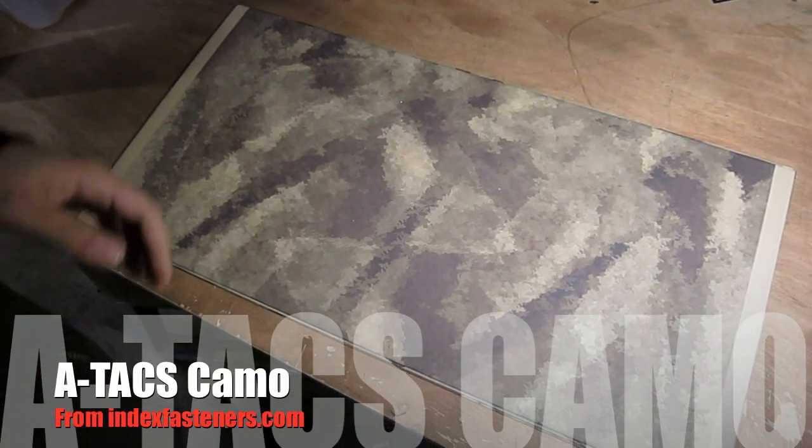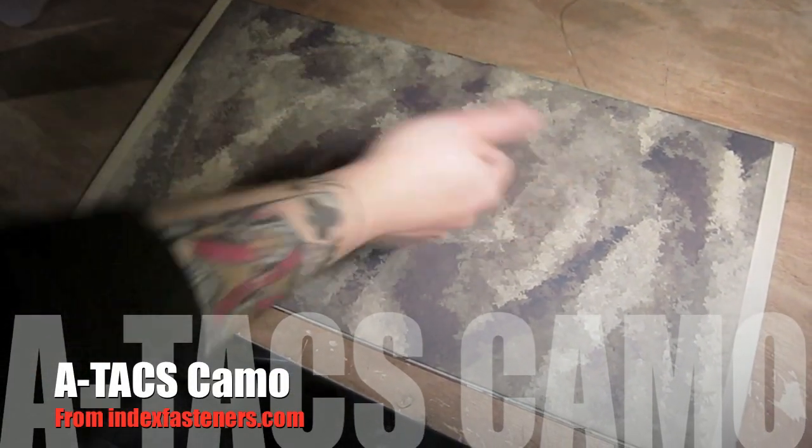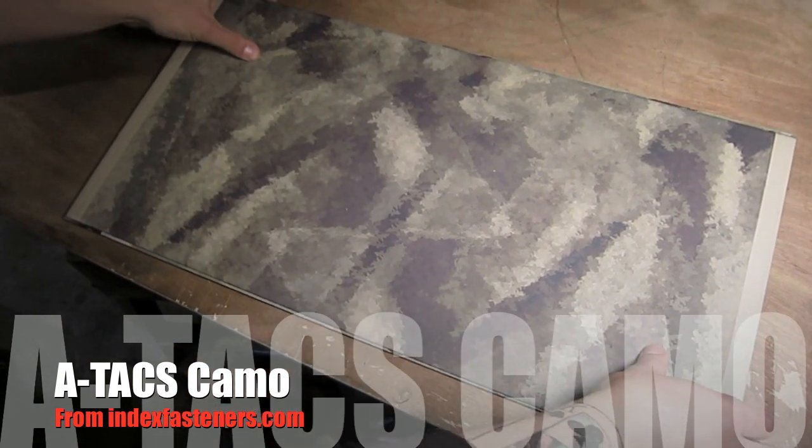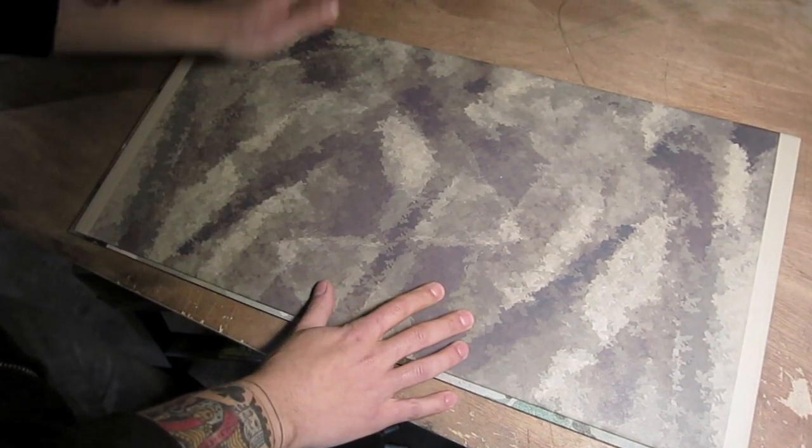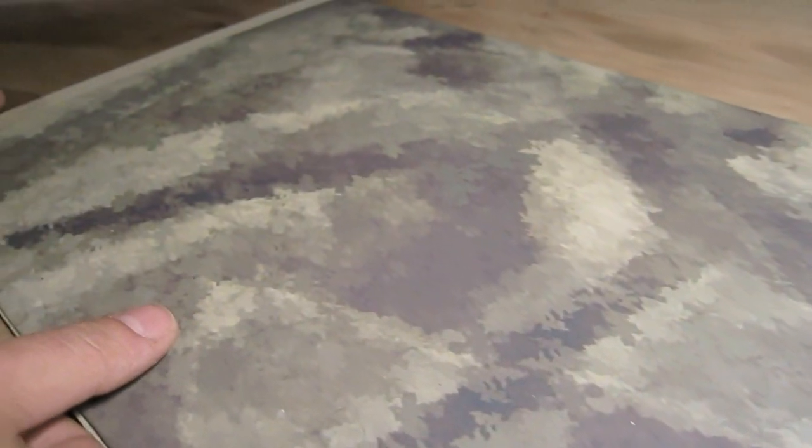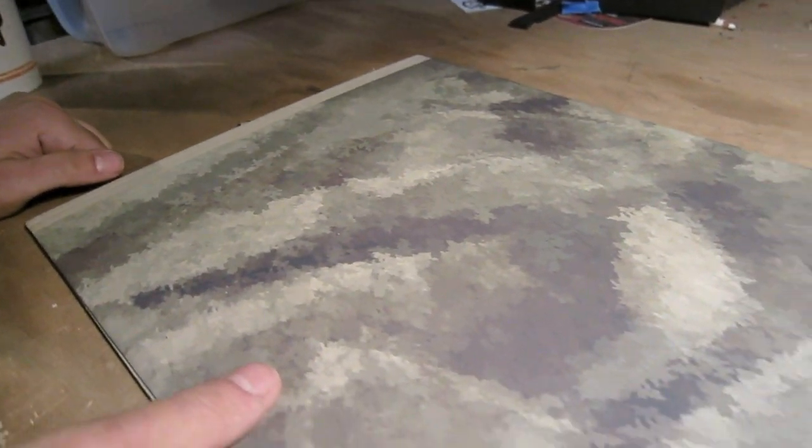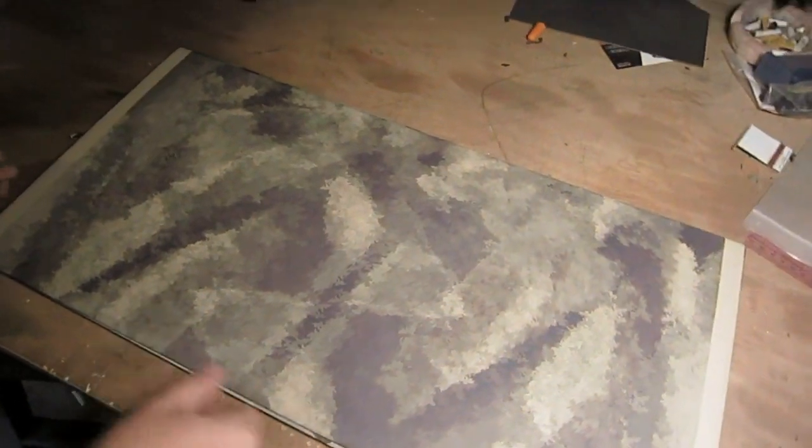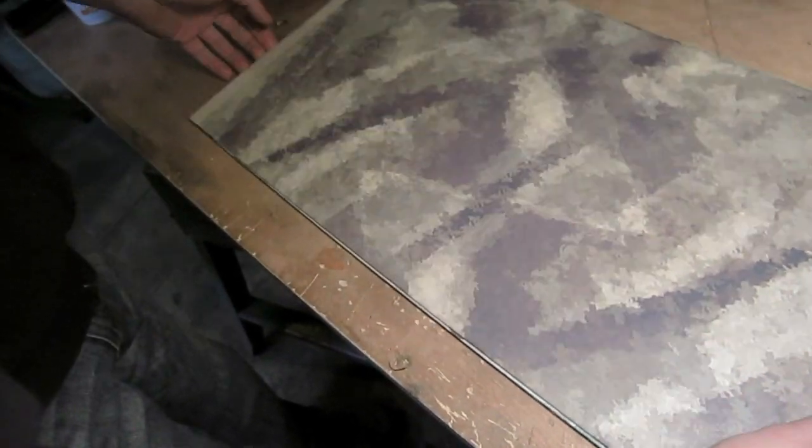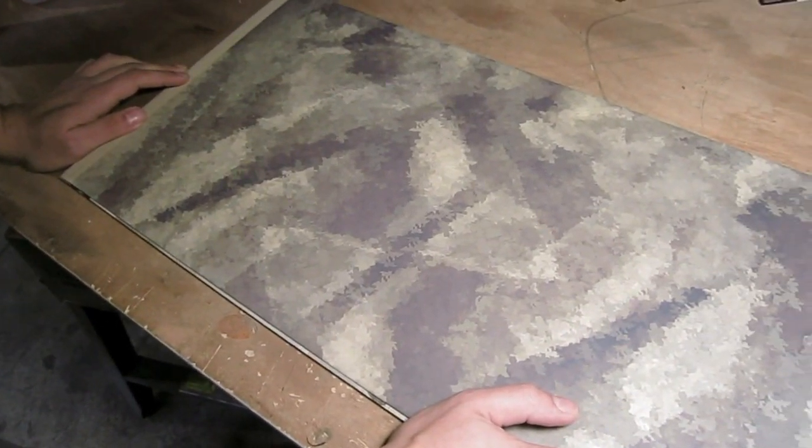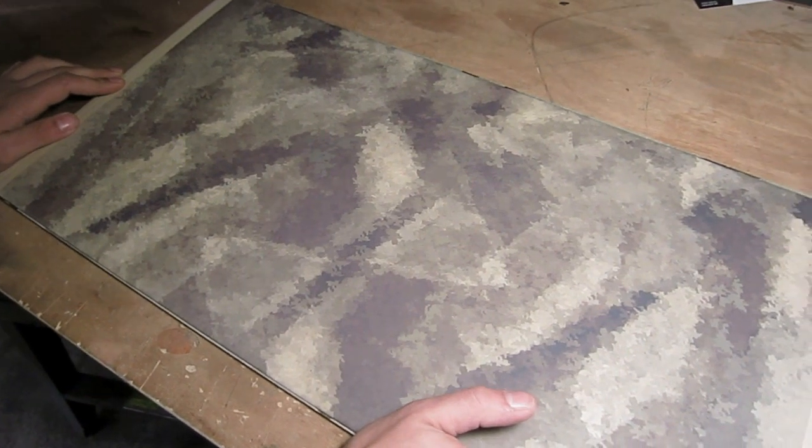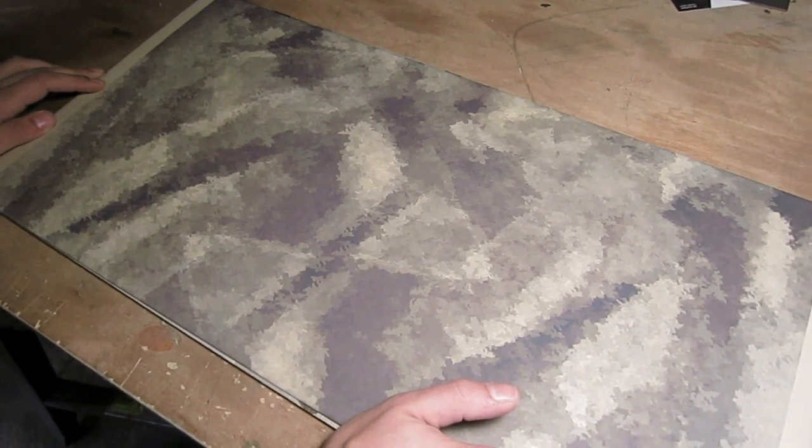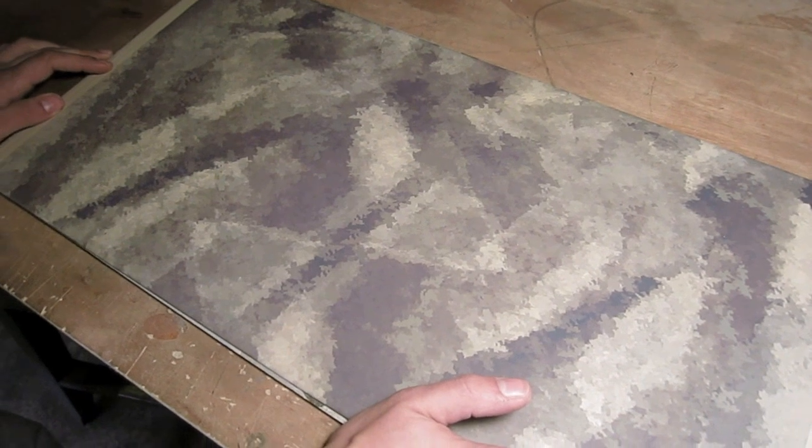Hey, what's up guys? We're here at the Filster HQ shop and I just received a very cool sample from our friends at Index Fasteners. It's a sample sheet of their new ATACS pattern and I'm doing my first impressions out of the box. We're going to unbox it and make a holster with it and I want to go over some of my first impressions.